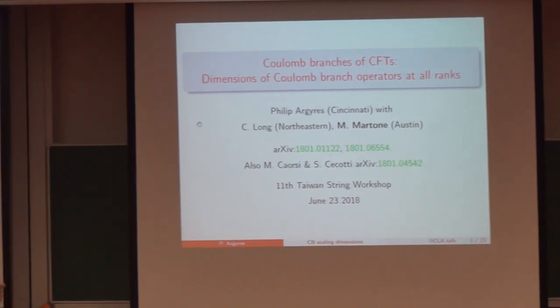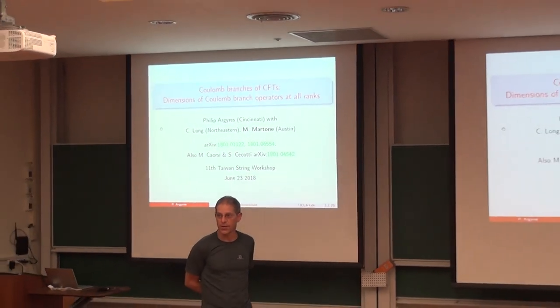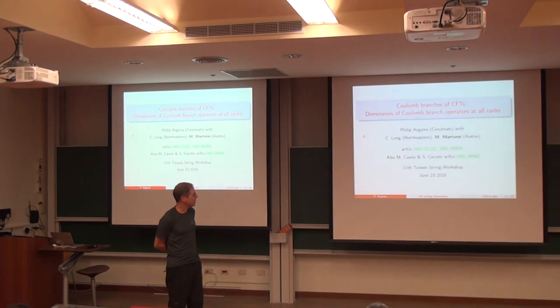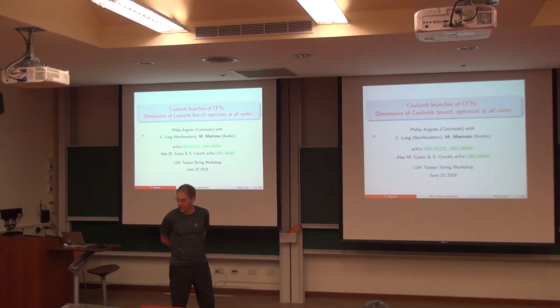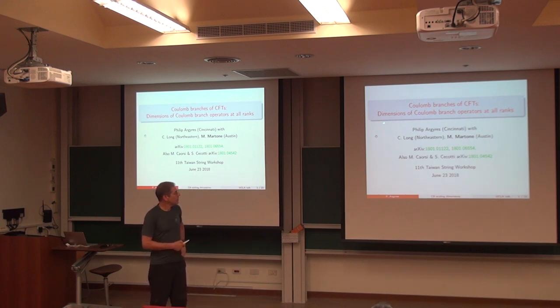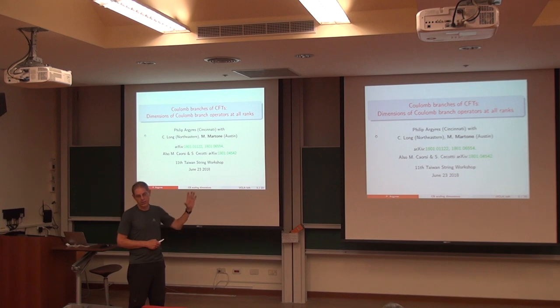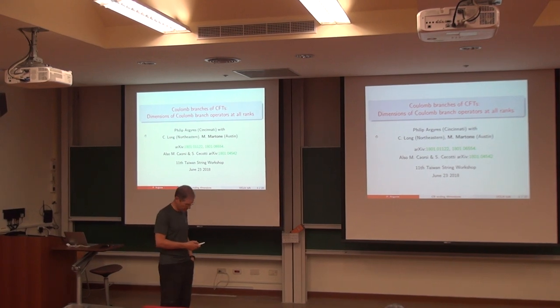Yesterday I told you about this general program of trying to constrain n equals 2 quantum field theories by classifying their Coulomb branch geometries. I outlined some of the results that we found. One of them that applied at higher ranks was that we figured out how to compute the possible allowed spectrum of anomalous dimensions, of scaling dimensions, of the Coulomb branch operators, the fields that get vevs on the Coulomb branch. Today I'll just focus on that result and try to show you how that came about.